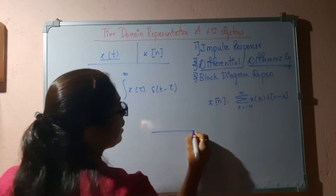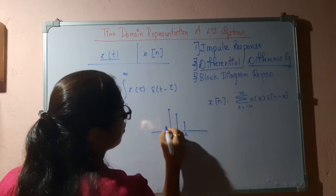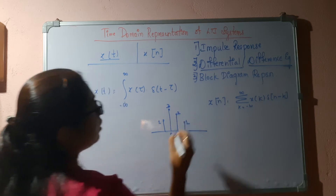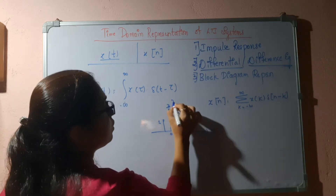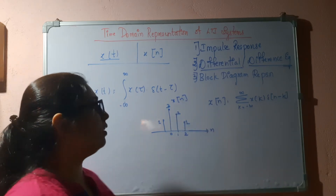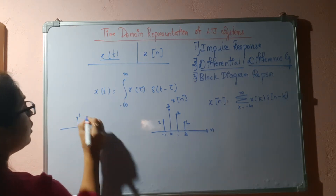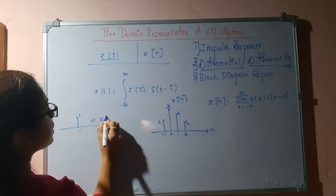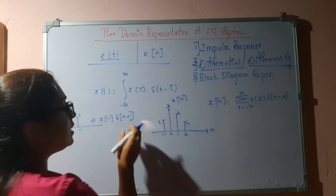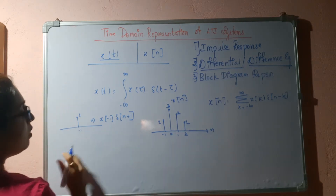For example, consider a signal x(n) with values: 1 at n = −1, 3 at n = 0, 2 at n = 1, and 1 at n = 2. I can break this signal into components. At n = −1, the value is 1, so this can be written as x(−1) δ(n + 1). δ(n + 1) exists only at n = −1. Next, at n = 0, the value is 3, which I can write as x(0) δ(n), since δ(n) exists only at n = 0.